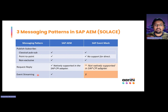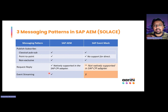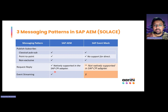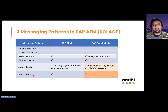Event streaming is another message pattern which is quite different from the others, and it is exclusively available in Advanced Event Mesh. It cannot be implemented in Event Mesh at all, because it requires a different infrastructure setup altogether. In event streaming, there is a stream of events flowing to the queue, and any consumer can consume messages hours or even days after the message has been published. There is a special infrastructure setup called a replay log that must be configured in SAP Advanced Event Mesh. I will create a standalone video dedicated to demonstrating this.